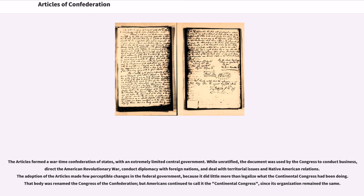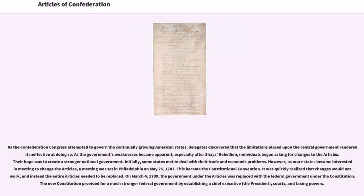That body was renamed the Congress of the Confederation, but Americans continued to call it the Continental Congress, since its organization remained the same. As the Confederation Congress attempted to govern the continually growing American states, delegates discovered that the limitations placed upon the central government rendered it ineffective. As the government's weaknesses became apparent, especially after Shays' Rebellion, individuals began asking for changes to the Articles, hoping to create a stronger national government.